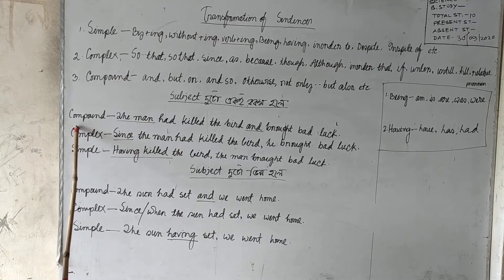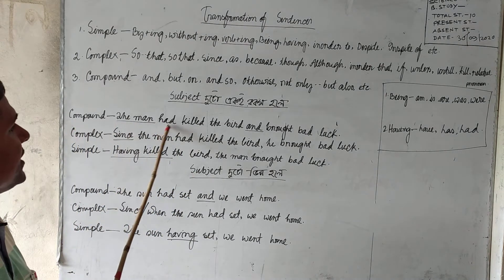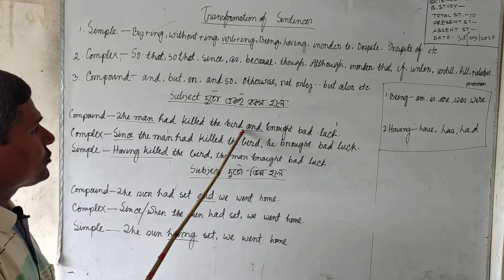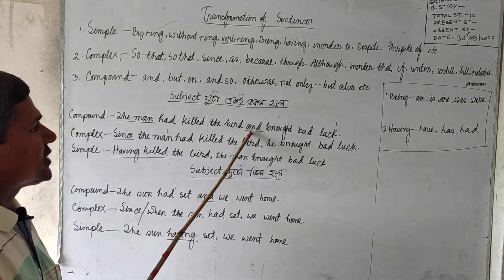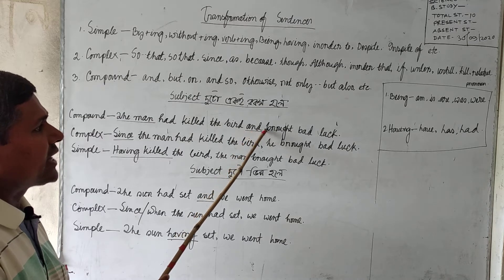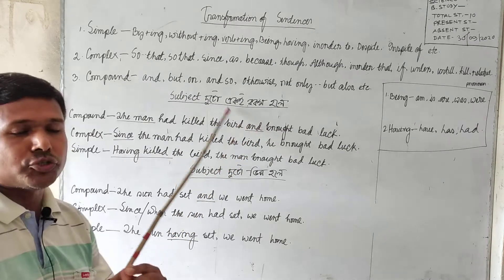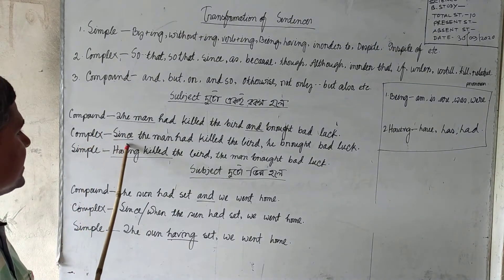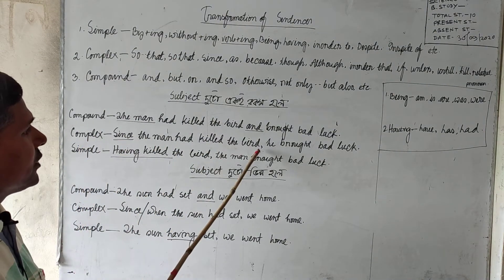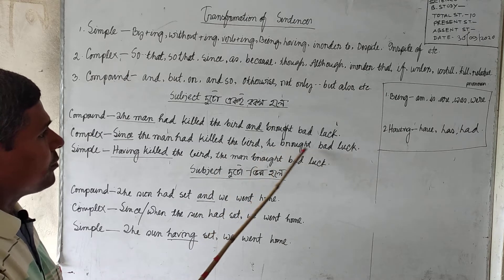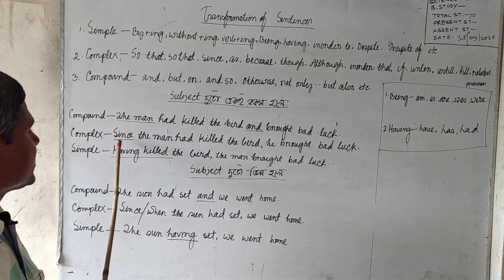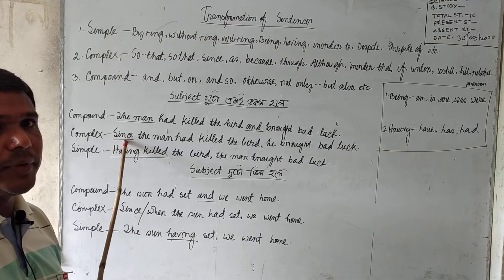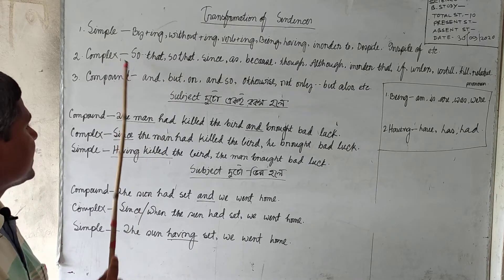First, we will write the compound sentence: 'The man had killed the bird and brought the bad luck.' We will write the compound sign and underline it. The second sentence is the complex: 'Since the man had killed the bird, he brought the bad luck.' We will write the first clause, underline 'since,' and write the complex sentence.